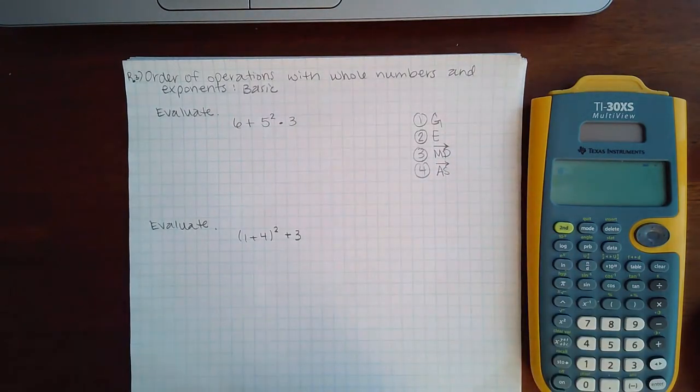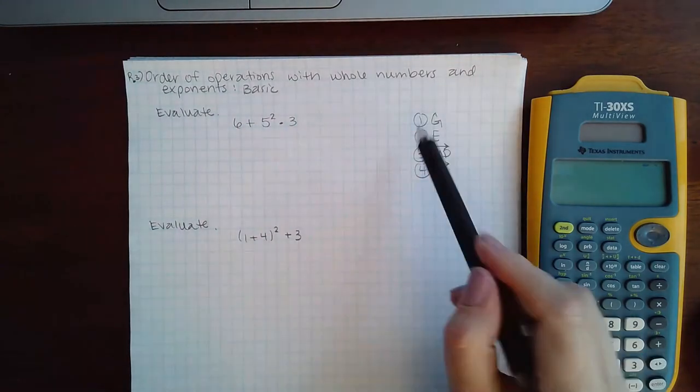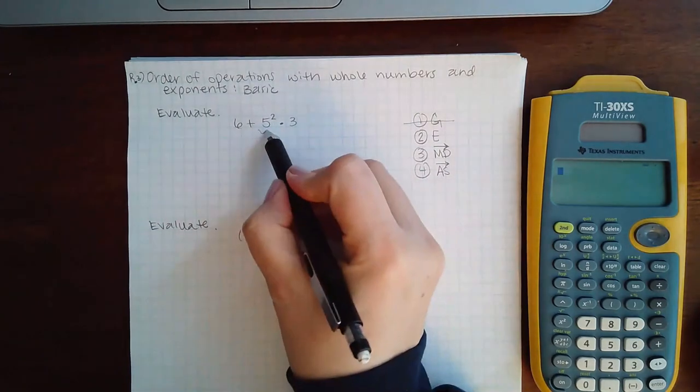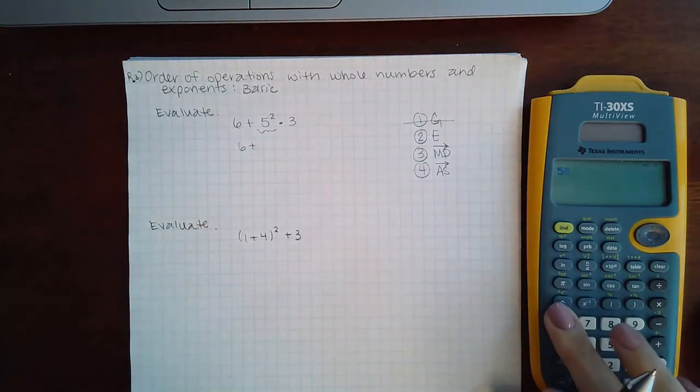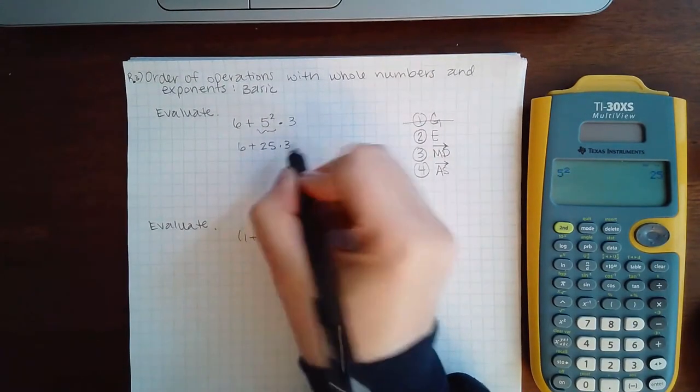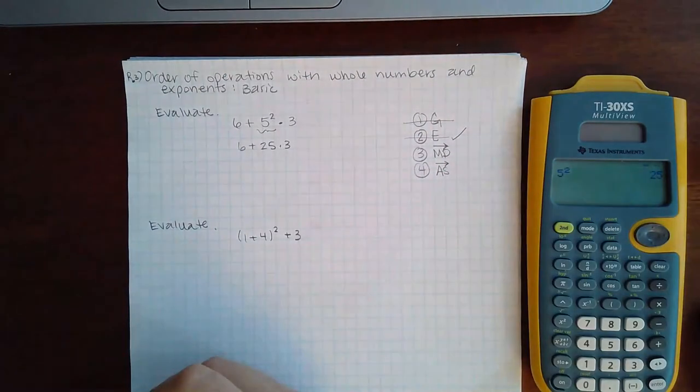So let's go ahead and start with this one. There are no grouping mechanisms so I don't need to do step one. There is something I need to evaluate here, so we're going to do that. Five squared, five squared is 25, and then I shouldn't cross that out, I should check it because that's the step we did.